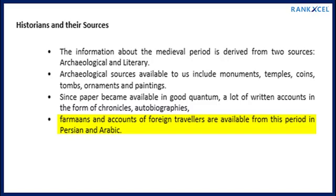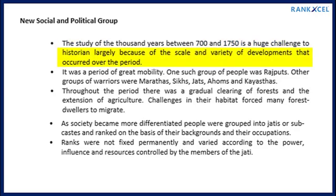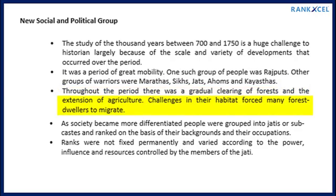The study of the thousand years between 700 and 1750 is a huge challenge to historians, largely because of the scale and variety of developments that occurred over the period. It was a period of great mobility. One such group of people was the Rajputs; other groups of warriors were the Marathas, Sikhs, Jats, Ahoms, and Kayasthas.